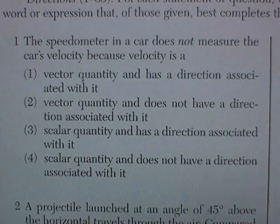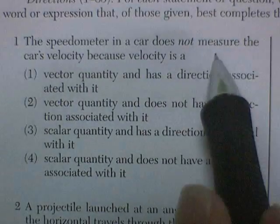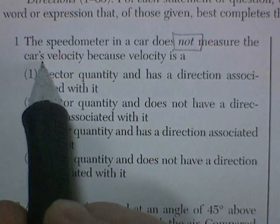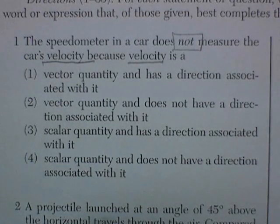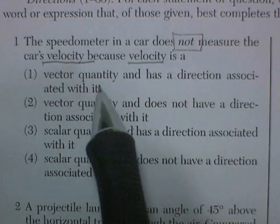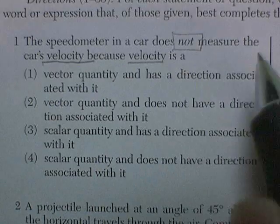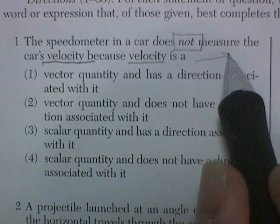Question 1. The speedometer of a car does not measure the car's velocity because velocity is... Well, this is a vector or scalar question. And so velocity is a vector. We draw it with an arrow.